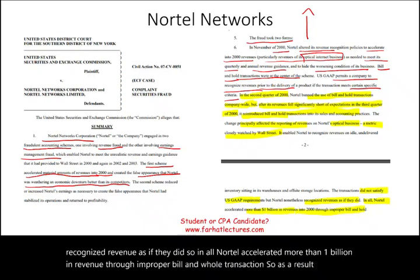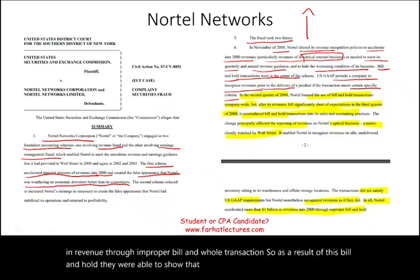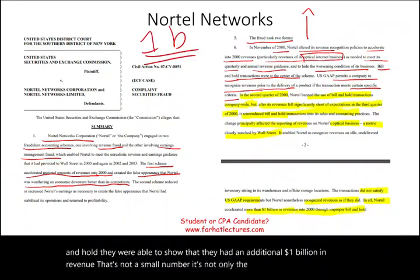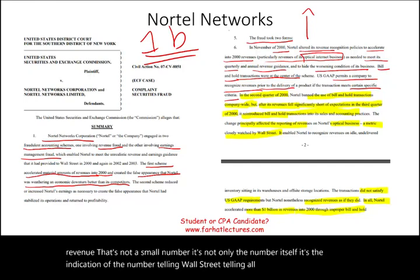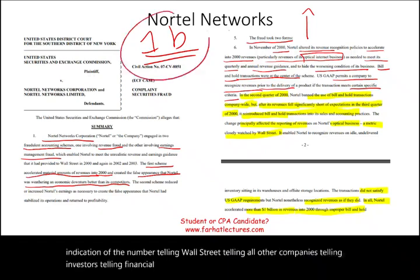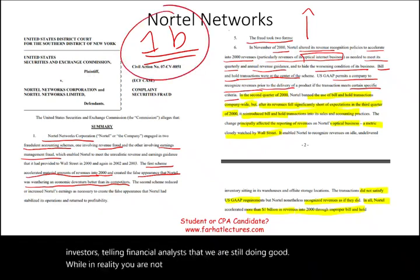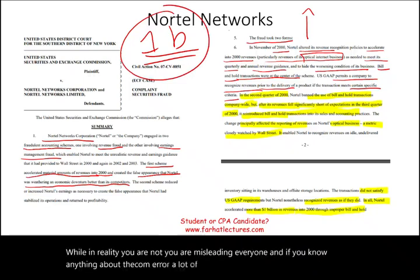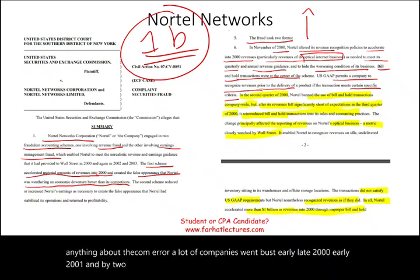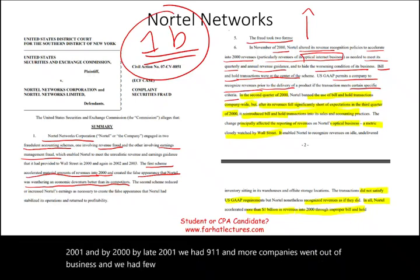As a result of this bill and hold fraud, Nortel was able to show an additional $1 billion in revenue. It's not only the number itself — it's the indication of the number, telling Wall Street, other companies, investors, and financial analysts that they were still doing well, when in reality they were not. They were misleading everyone. If you know anything about the dot-com era, many companies went bust in late 2000 and early 2001. By late 2001, we had 9/11 and more companies went out of business along with several accounting fraud cases. Once you mislead investors, you're misleading everyone.